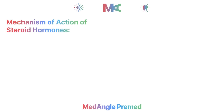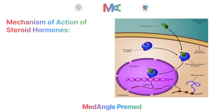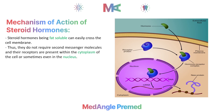Now let's discuss the mechanism of action of steroid hormones. Steroid hormones are fat soluble, so they can cross the cell membrane easily. Because they enter the cell directly, they do not require any receptor on the surface of the cell membrane, and no second messenger molecules are required.